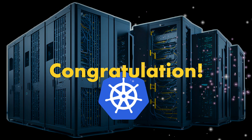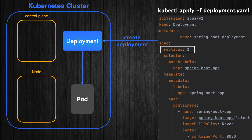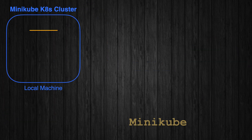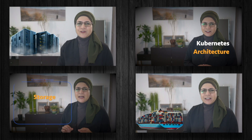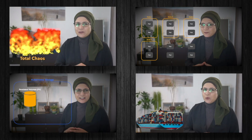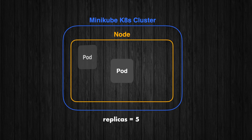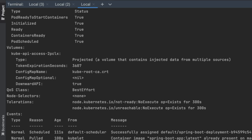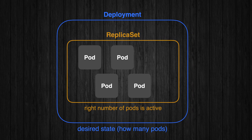Congratulations! In this step-by-step tutorial, you went through deploying a Spring Boot application using Docker, Minikube, and kubectl. We covered everything from setting up Minikube, to creating a Docker image and deploying your app on a Kubernetes cluster. You learned how to scale your application, troubleshoot some issues, and use Kubernetes' powerful self-healing feature.